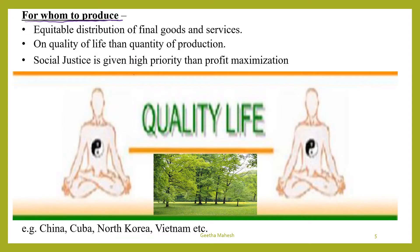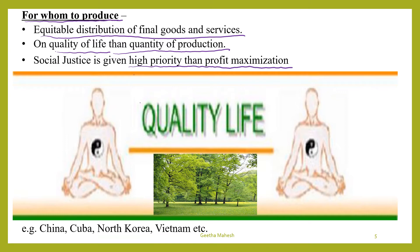The third basic problem is for whom to produce. In a centrally planned economy they produce goods and services for the poorer section of the society even when production of such goods does not yield a profit. They give importance to equitable distribution of final goods and services, prioritize quality of life over quantity of production, and give higher priority to social justice rather than profit maximization. Good examples of centrally planned economies are China, Cuba, North Korea, and Vietnam.